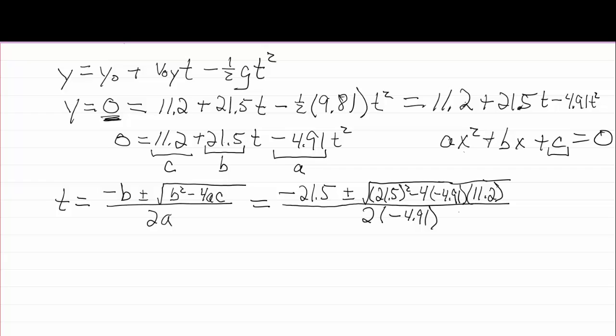All right, I've plugged in all my numbers here. I can simplify this a bit before I actually plug this into a calculator and I'll show you how I do that here. In the denominator, 2 times minus 4.91 turns it back into the minus 9.81 so that'll simplify things a little bit. 21.5 squared I can leave alone for the time being. I've got a minus times a minus that turns that part into a plus. So I'll have plus 4 times 4.91 times 11.2.